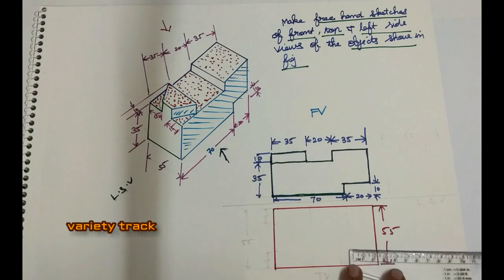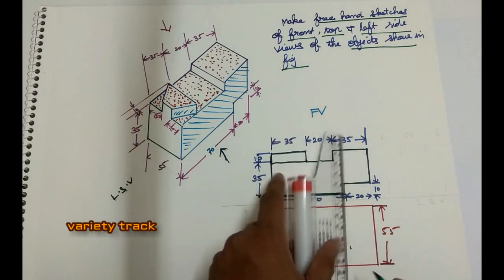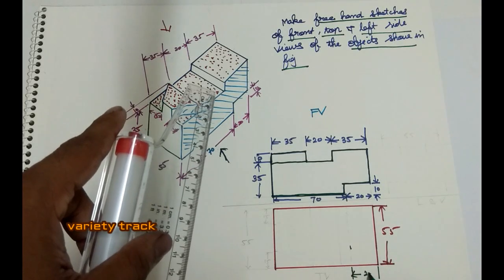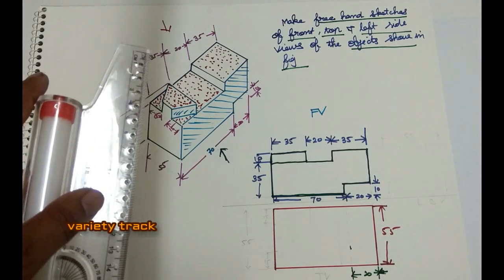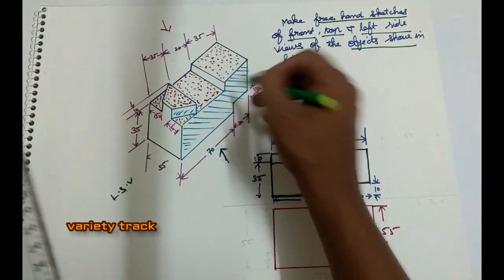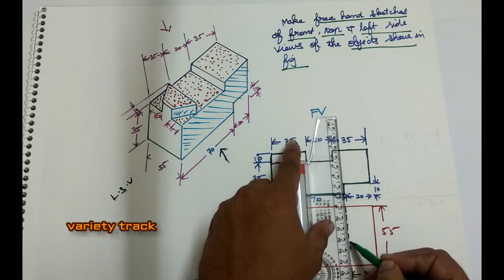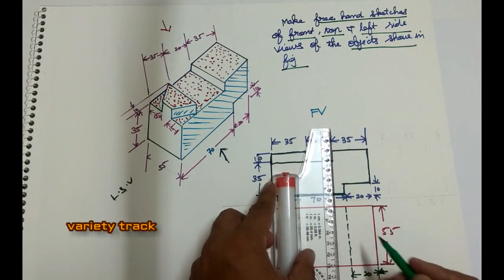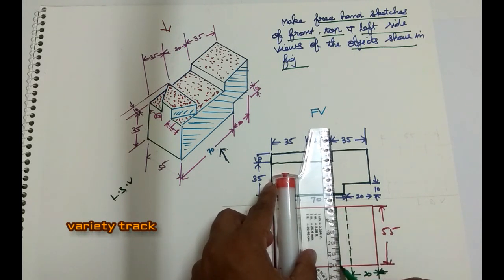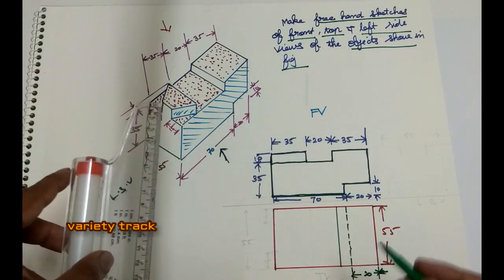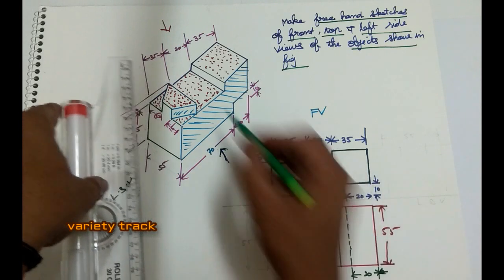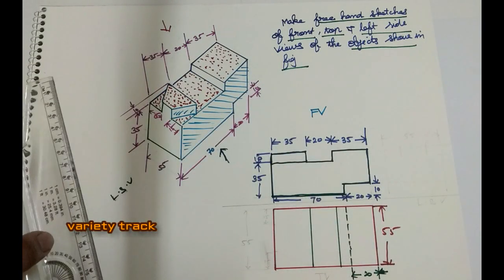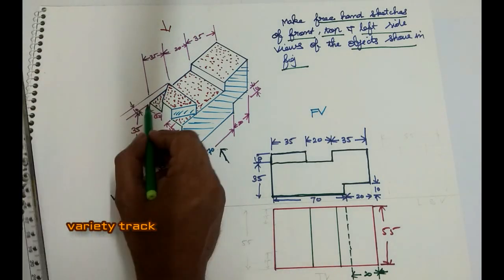The imaginary part, the distance is 20. The imaginary part distance is 20, top imaginary. Dark line, 35 distance, dark line, full. 20mm.